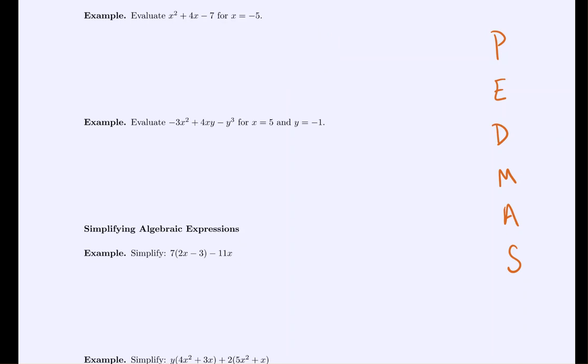Now here we're asked to evaluate the expression when x takes on the value negative 5. So everywhere there was x, I'm now going to replace that with negative 5. So we have negative 5 squared. Here the parentheses are important because this is saying all of negative 5 squared. That would be negative 5 times negative 5 plus 4 times negative 5 minus 7.